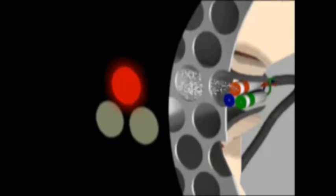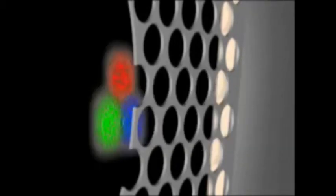The stronger the electron beam, the brighter the phosphors glow. A sheet of metal with holes in it helps keep the electron beams aligned exactly with the phosphors. This is called a shadow mask.